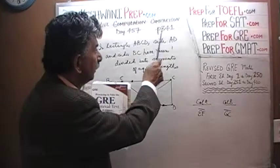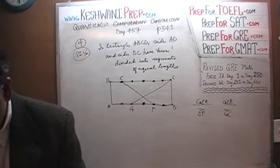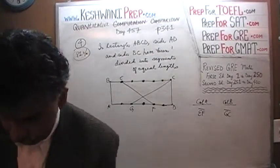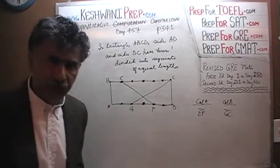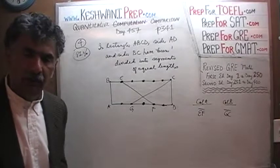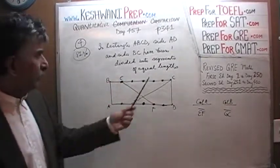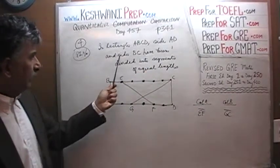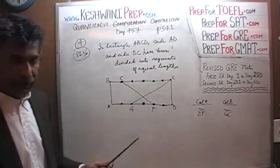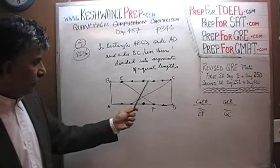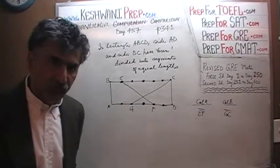Please turn to it, page number 341, problem number 4. The problem is already on the blackboard. Here is what the problem says. The geometry question, we have been given a rectangle ABCD right here, and we are told that the side AD and side BC have been divided into segments of equal length. As we can see, 1, 2, 3, 4, 5, and 6 segments, and these segments are of equal length.